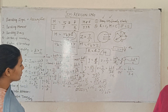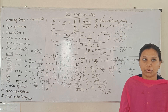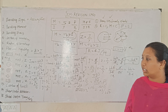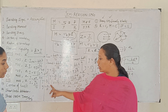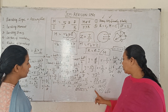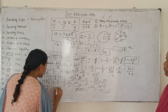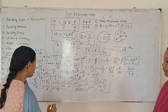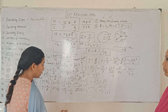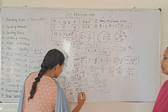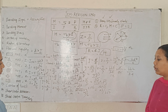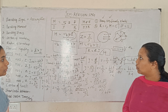For diamond section: distance is a by root 2, section modulus is a³ by 6·root 2. For square section: I equals a⁴ by 12, section modulus equals a³ by 6. So diamond section modulus is a³/6·root 2 and square is a³/6.